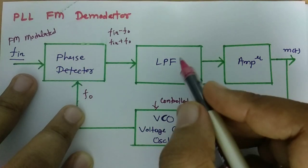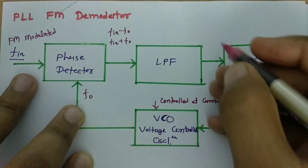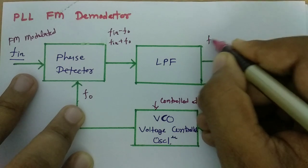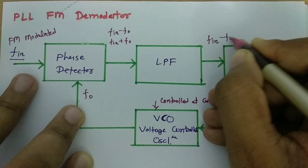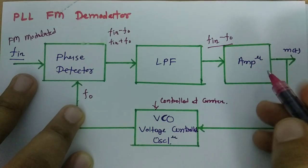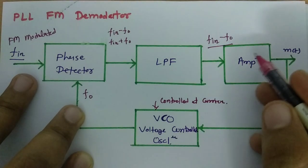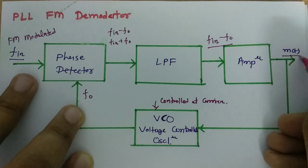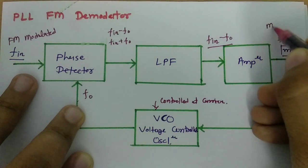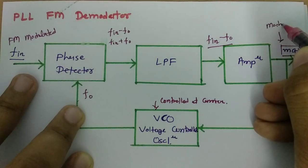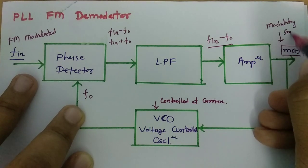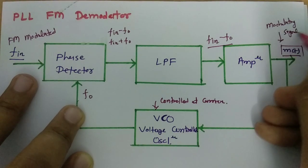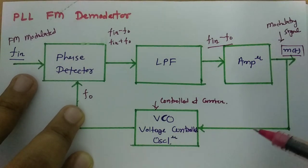When you pass this signal through a low pass filter, you get the F_in minus F0 frequency component, and when you amplify that, it results in the modulating signal. This is how demodulation is achieved.